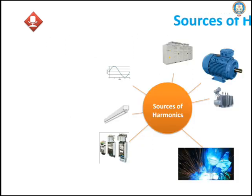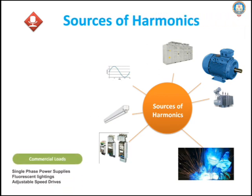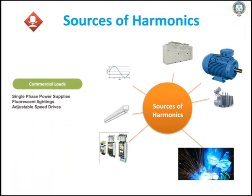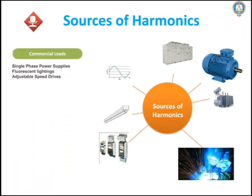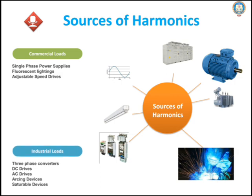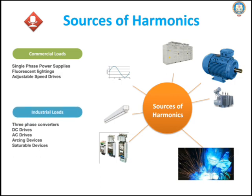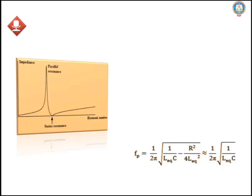What are the sources of harmonics? The sources of harmonics are commercial loads and industrial loads. Commercial loads include single-phase power supplies, fluorescent lightings, and adjustable speed drives. Industrial loads include three-phase converters, DC and AC drives, arc working devices, and saturable devices.